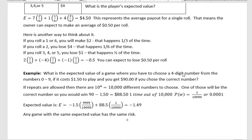Next example: what is the expected value of a game where you choose a four-digit number from the digits zero through nine? It costs $1.50 to play and you get $90 if you choose the correct number. Since you can repeat digits — like 7777 — the first number has 10 choices, the second has 10, the third has 10, and the fourth has 10, giving us 10 to the fourth power, or 10,000 different possible numbers.